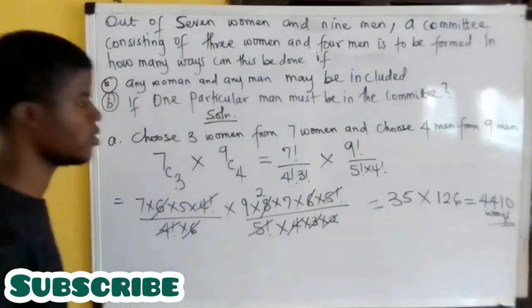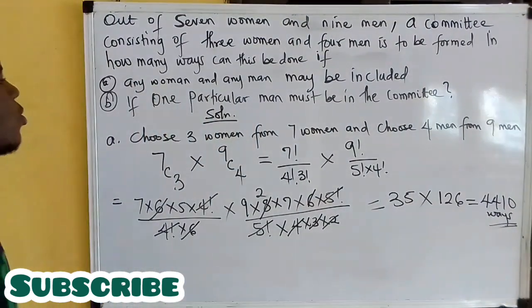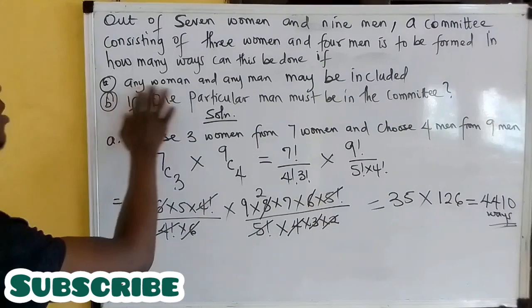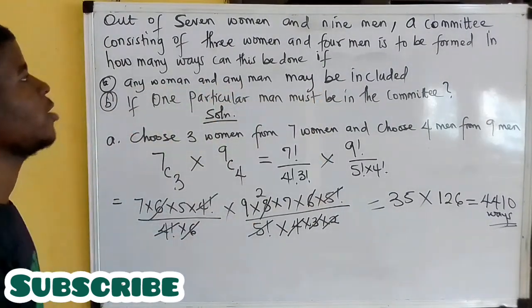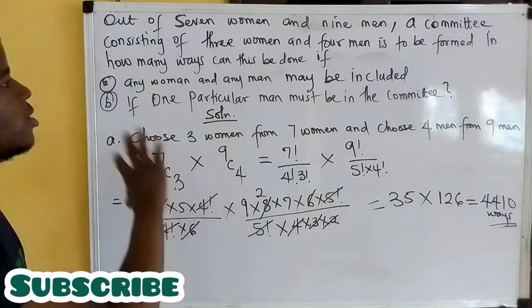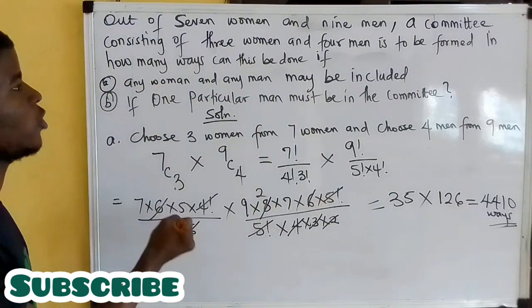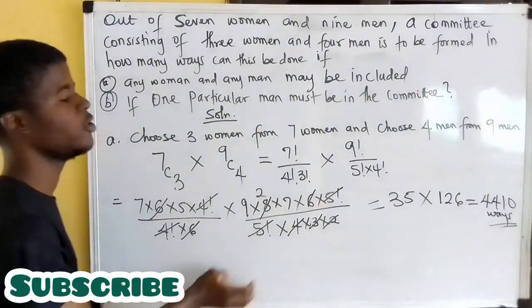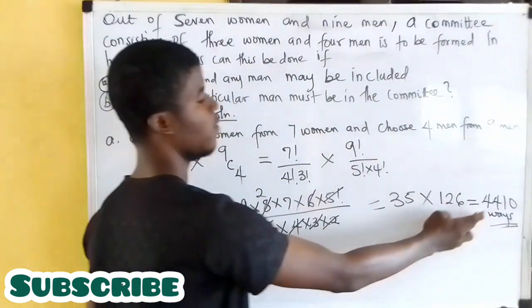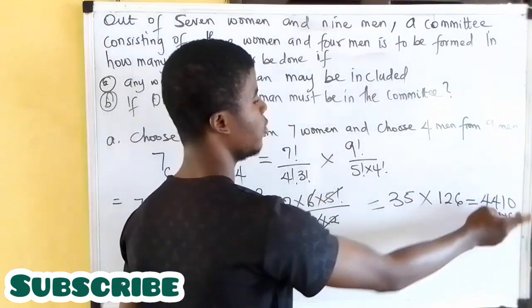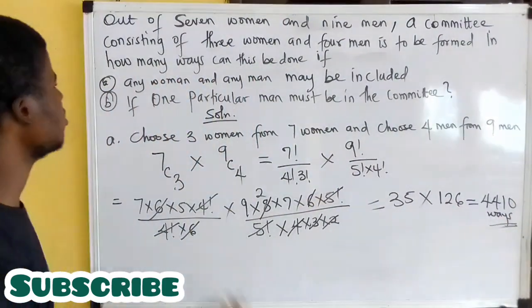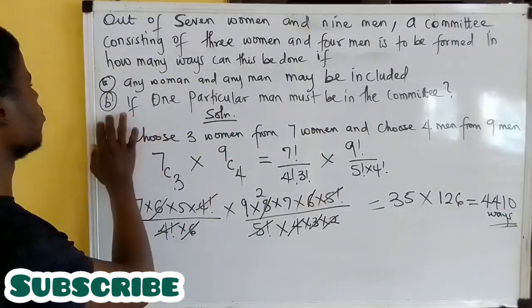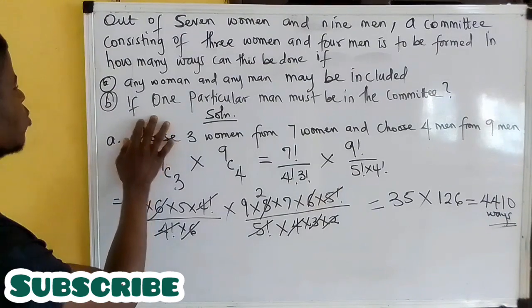So 35 times 126 equals 4,410 ways. If any man and any woman may be included, the selection can be done in 4,410 ways.